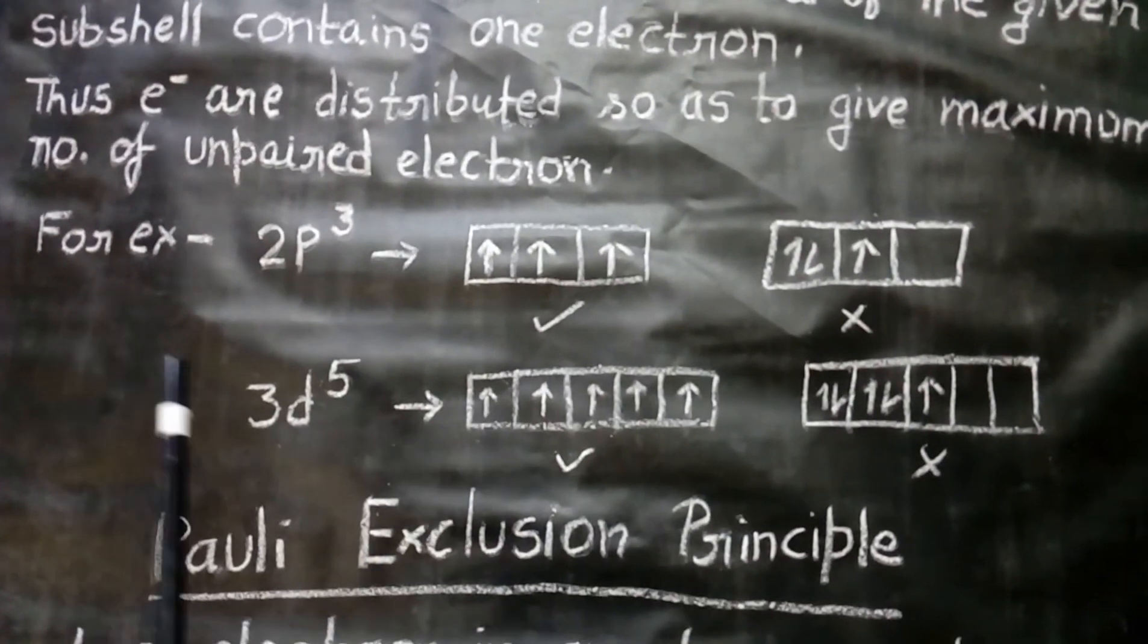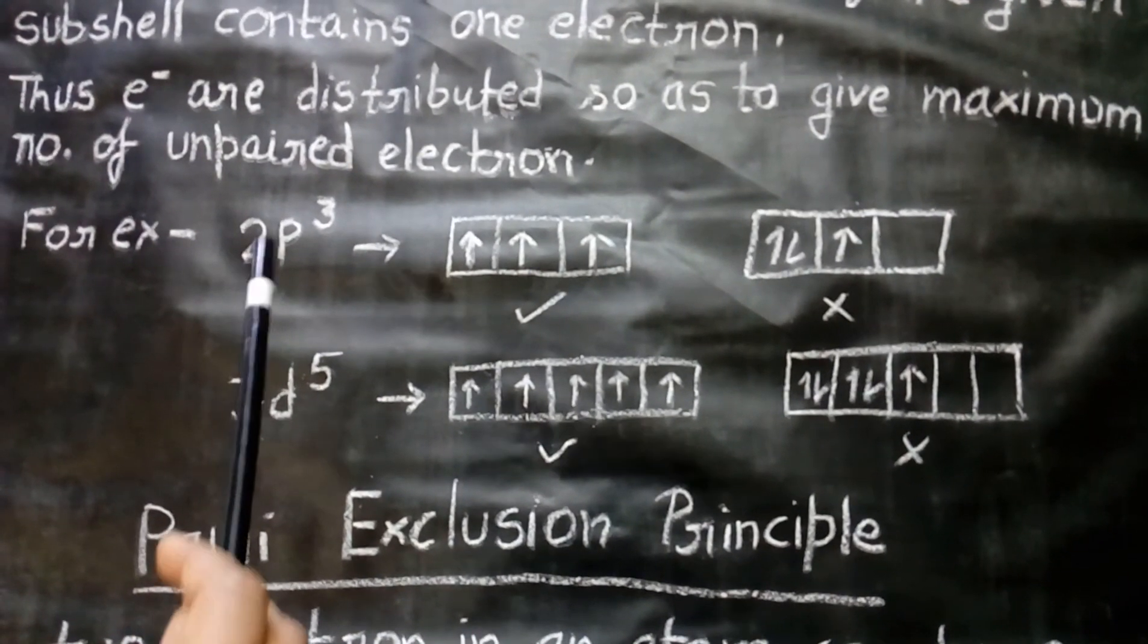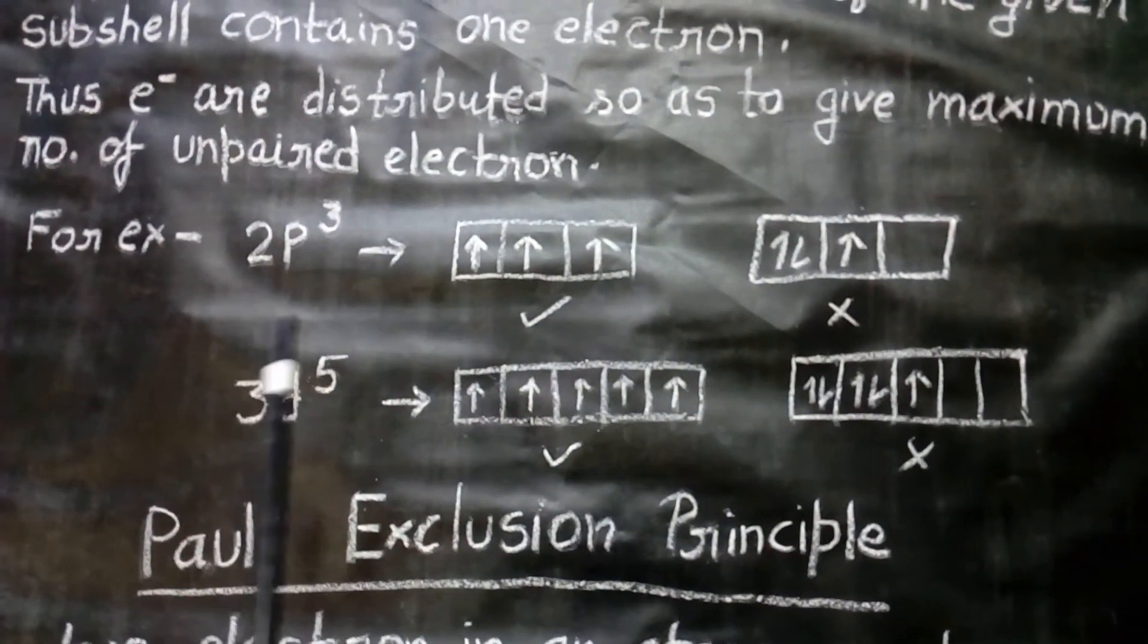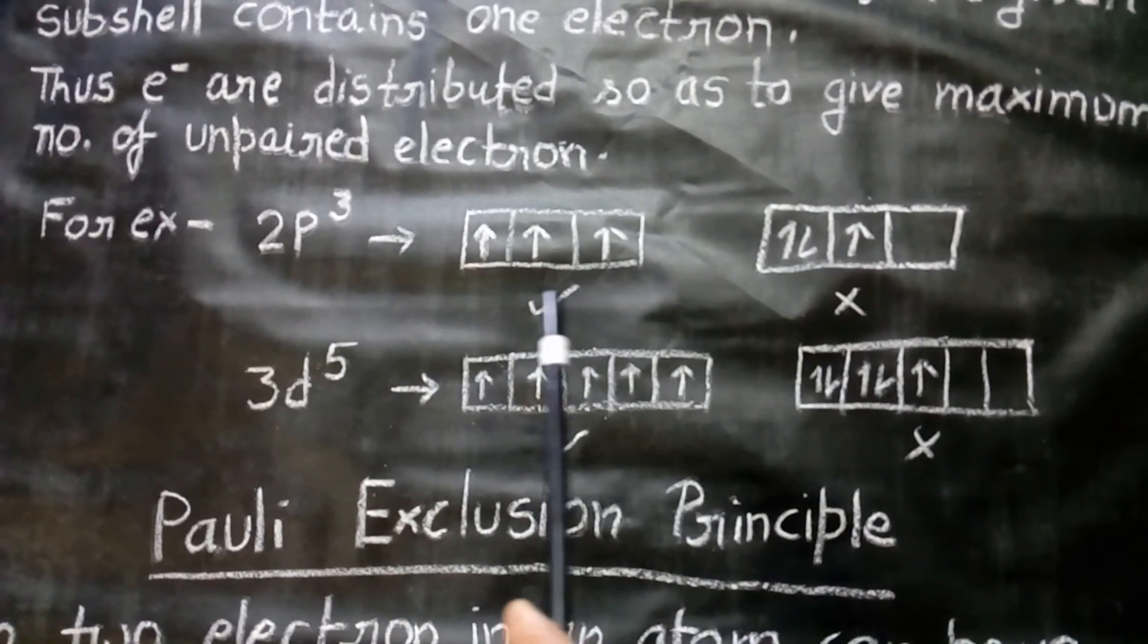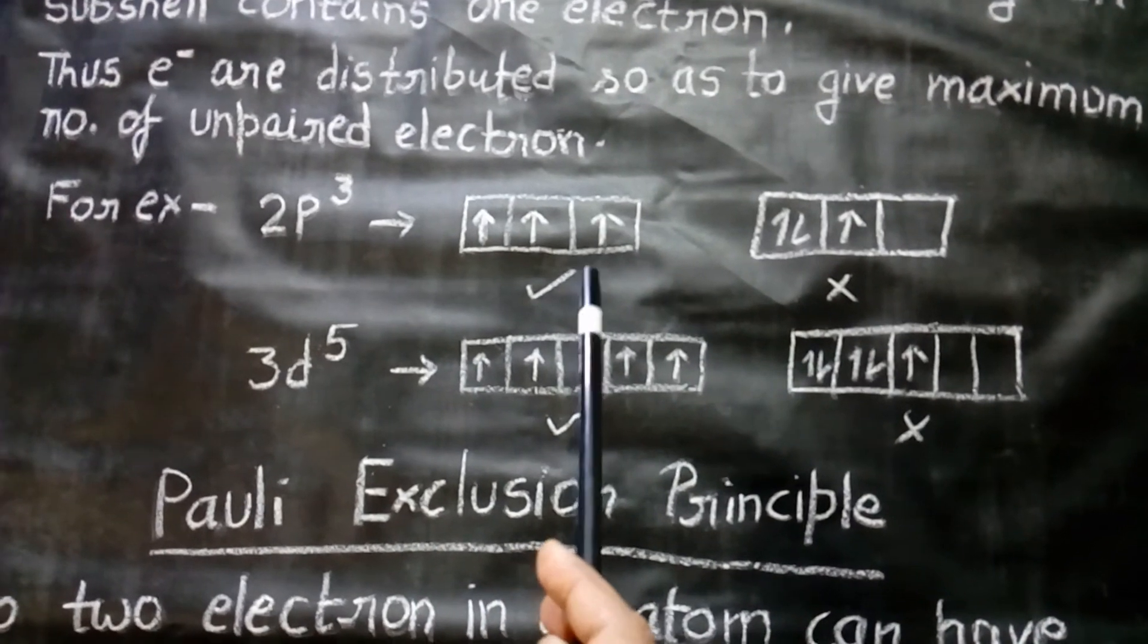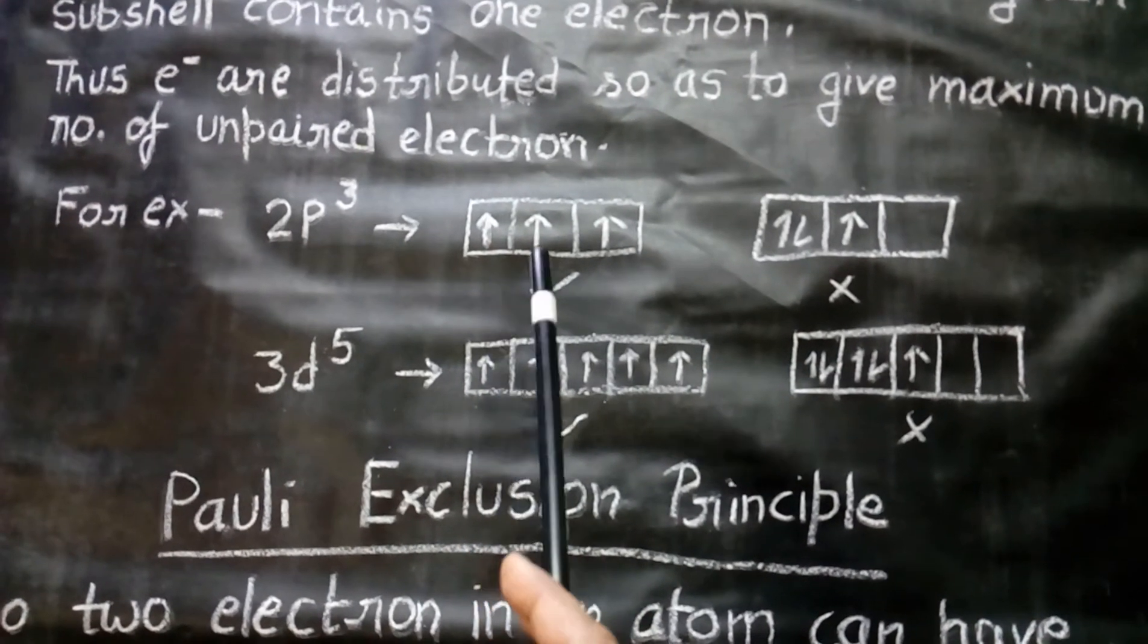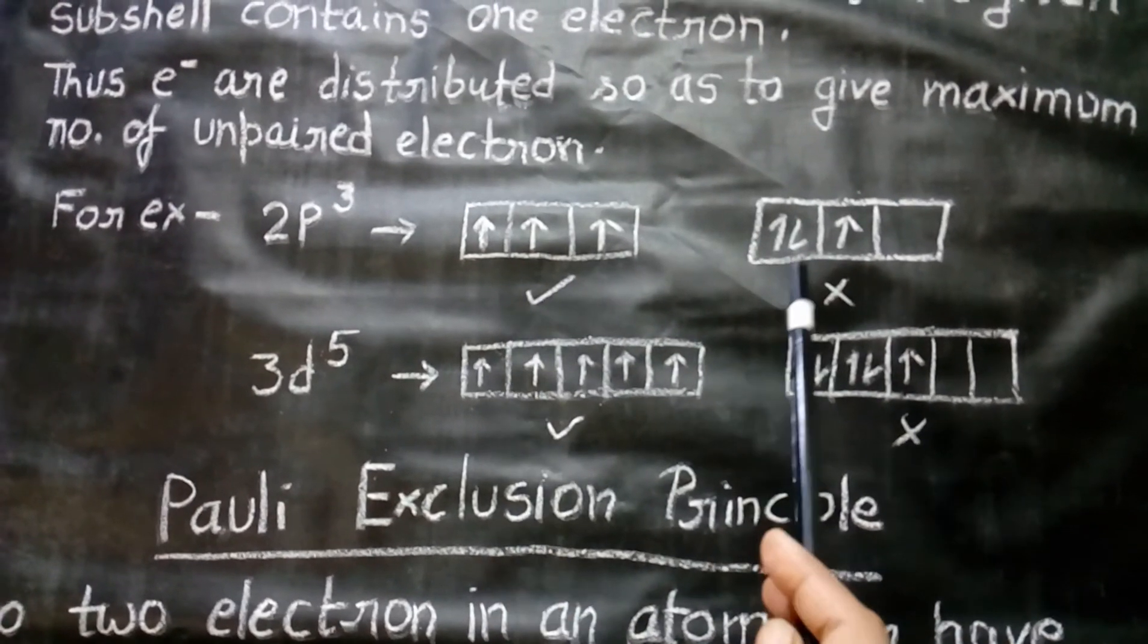Firstly, we will consider 2p3. In the case of 2p3, there are 3 electrons. So, we know in a p-sub-shell, there are 3 p-orbitals. The electron will firstly occupy all the p-orbitals, then the pairing of electrons takes place. So, this is the right answer and this is wrong.